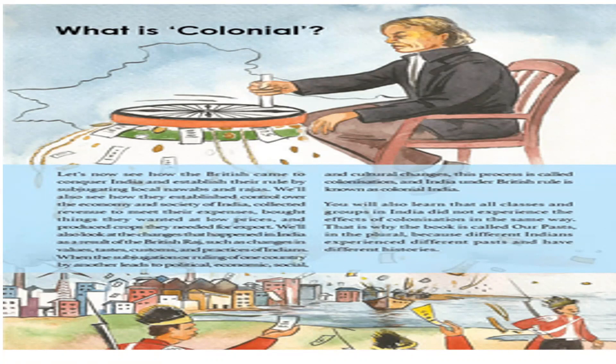Previously, we started our video with what colonial means. It is the British who came to conquer the country and establish their rule by subjugating the local Nawabs and Rajas. They established control over the economy and society, collected revenue to meet all their expenses, bought the goods they wanted at low prices, and produced crops they needed for export. These crops and what they made local people farm and produce for their benefit, we will discuss in further chapters.